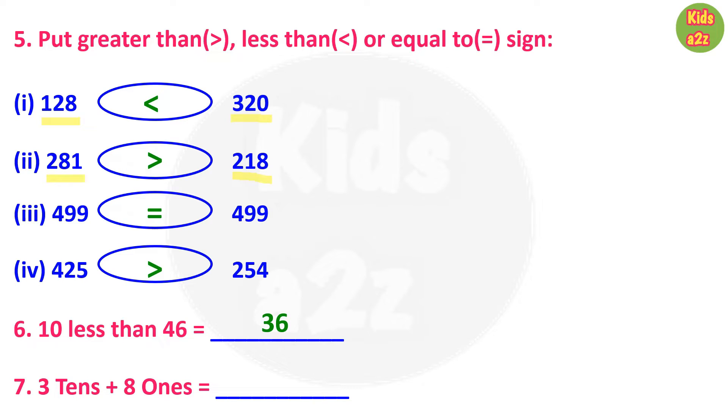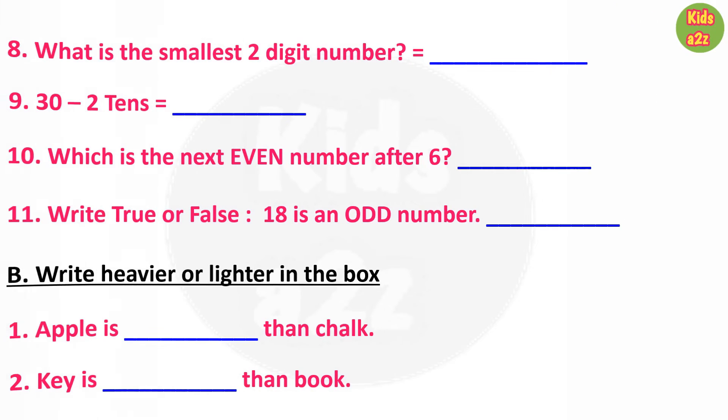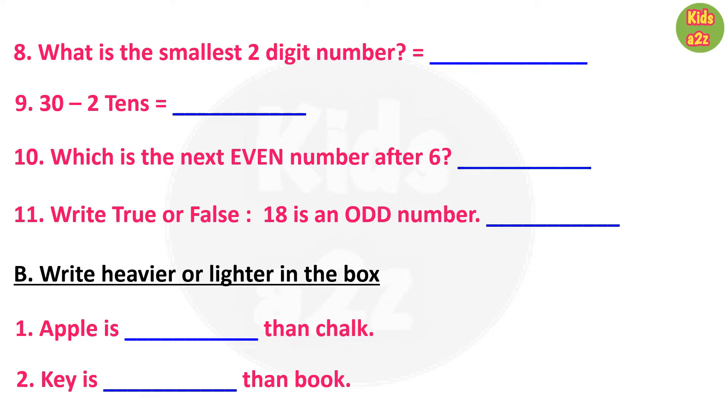Question number 7: 3 tens plus 8 equals to 38. Question number 8: what is the smallest two digit number? Answer is 10.